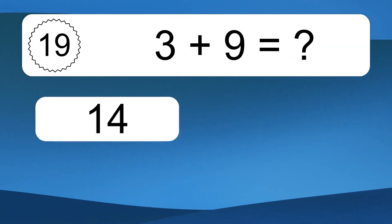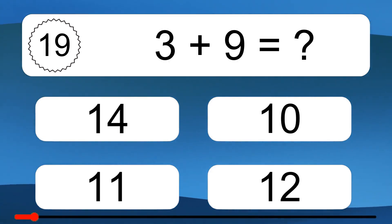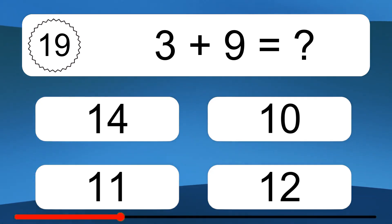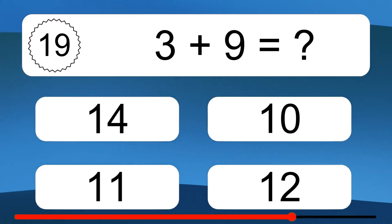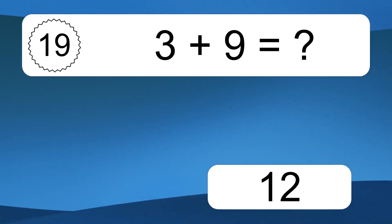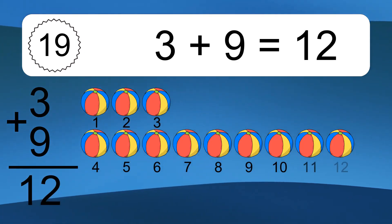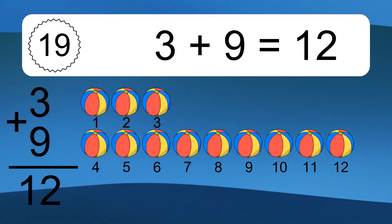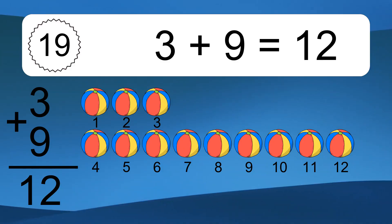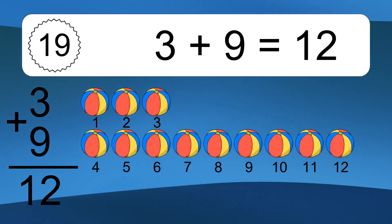3 plus 9 equals what? 3 plus 9 equals 12. Let's count it: 1, 2, 3, 4, 5, 6, 7, 8, 9, 10, 11, 12.